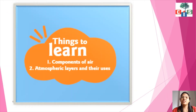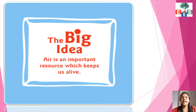What are we going to learn in this chapter? We are going to learn about components of air — meaning how many components air is made up of — and secondly, atmospheric layers and their uses. The atmosphere consists of different types of layers that we are going to see.